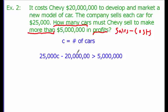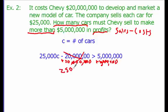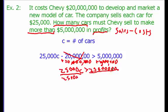To solve, we add $20 million to both sides, giving us 25,000C > 25,000,000. Then we divide both sides by $25,000. The zeros cancel out: $25,000,000 divided by $25,000 gives us $1,000,000 — let me verify that. Yes, $25,000,000 divided by $25,000 equals 1,000. So C > 1,000.